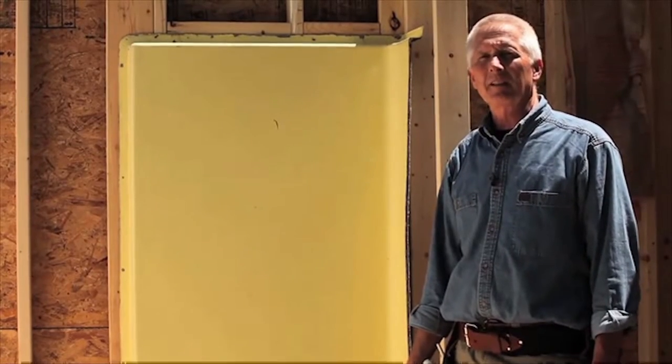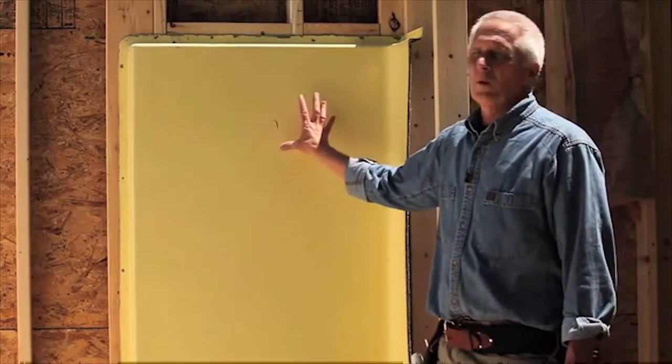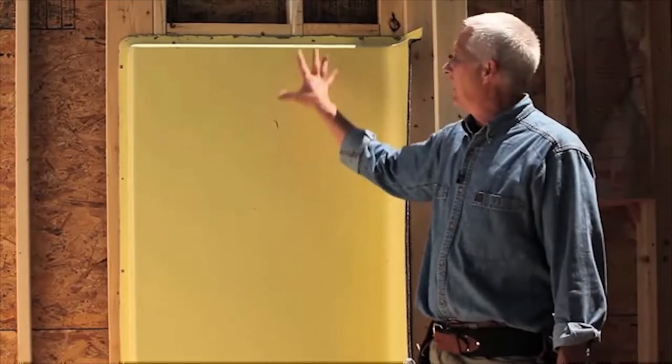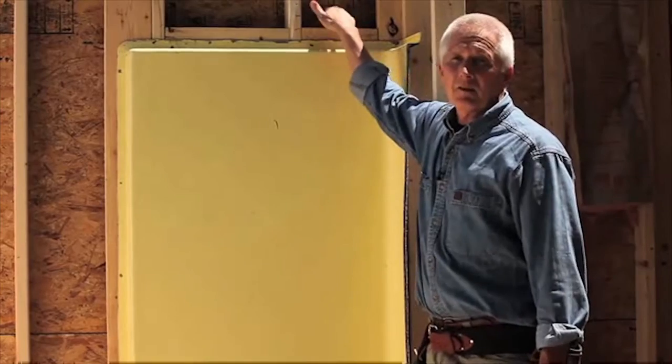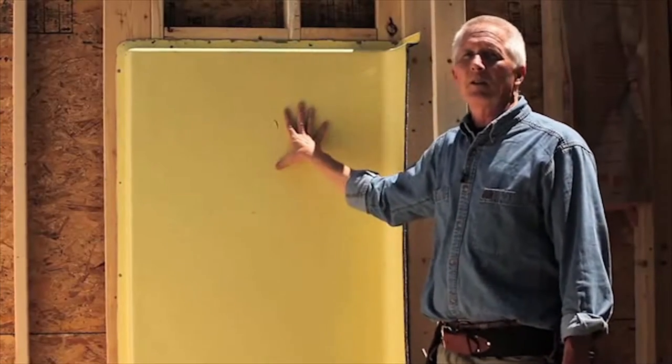Here's an area that the code specifically addresses. When a tub or shower unit is located on an exterior wall, you have to insulate and air seal the outside wall cavities before the unit goes in.